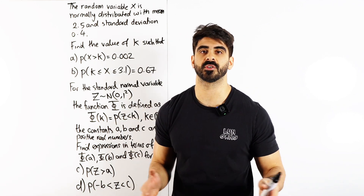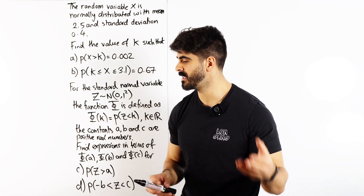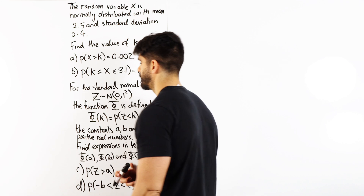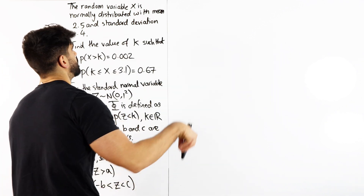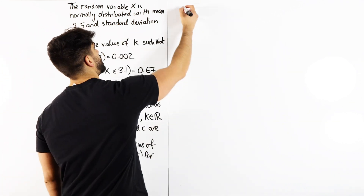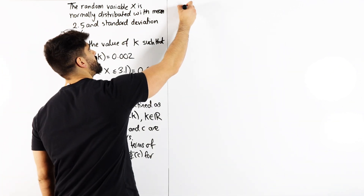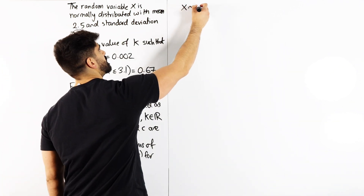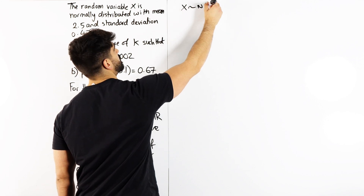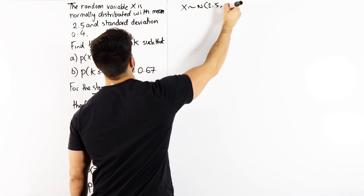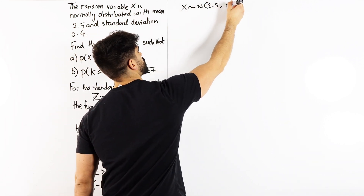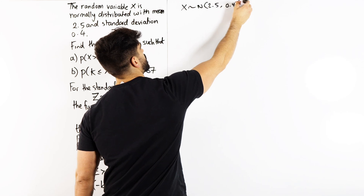I don't care how easy the question is — in the exam, sketch everything. So here, x is normally distributed with mean 2.5 and standard deviation 0.4.